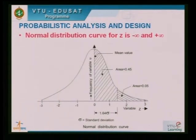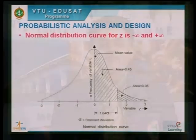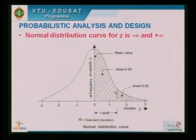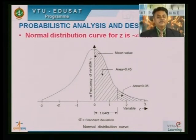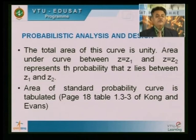This standard probability curve shows how we can use statistics for RC structure design. I make the structure such that the variable value has z equal to 1.64 times sigma, so the probability of occurrence during the RC structure's life is about 90 percent — this is called the level of confidence. The probability of it not occurring is only 5 percent, represented by an area of 0.05. Using this, we calculate different concepts in RCC design.